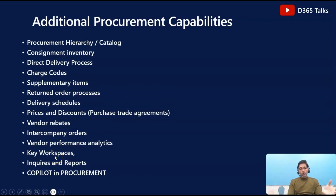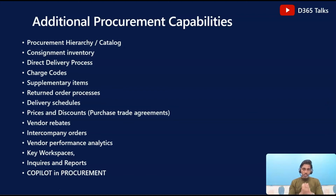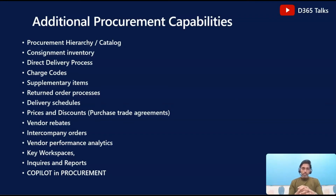Last but not least, we will also talk about the key workspaces and enquiries which will help you as an end user or functional consultant in your day-to-day job. We will also talk about some of the important Copilot features currently available in GA for the Procurement and Sourcing module. This is how the overall agenda of these procurement and sourcing episodes is going to look like, so please subscribe to the channel to get regular updates whenever I post videos related to these features.